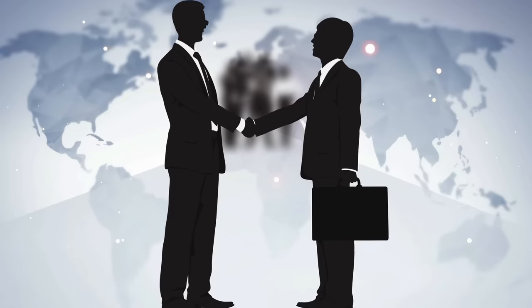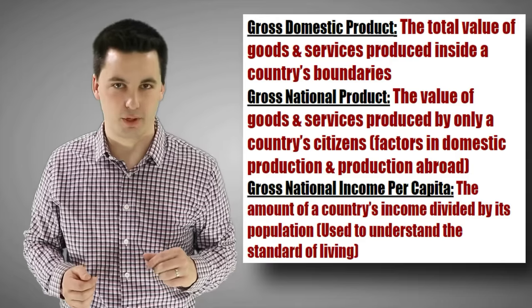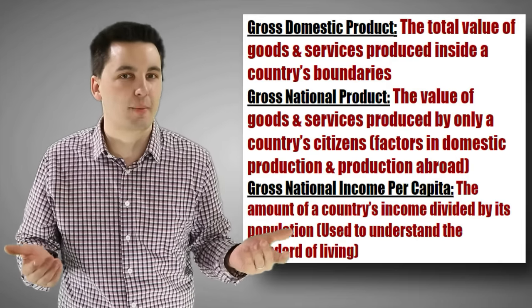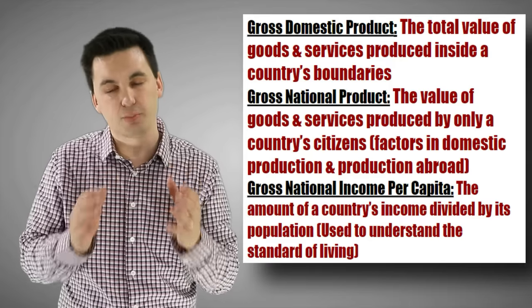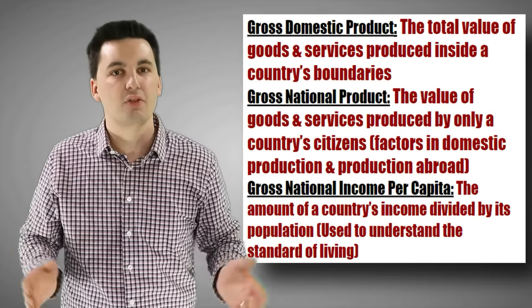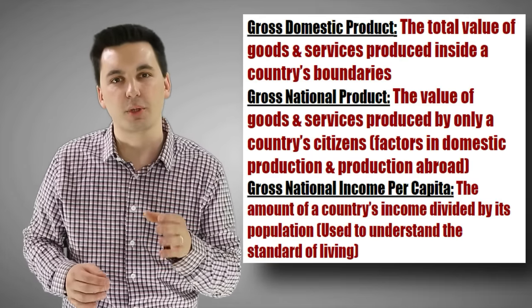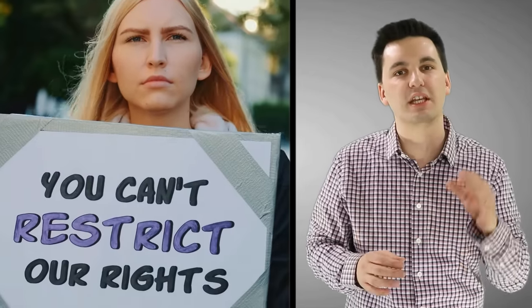Different gross indicators measure the formal economy. GDP is like taking the temperature of the economy. GNP looks at the production of all of a country's citizens. GNI looks at the standard of living. These help us understand what's going on with a country's formal economy. We can also look at the Gender Inequality Index and the Human Development Index to understand inequality between genders, expected years of schooling, life expectancy, and standard of living.